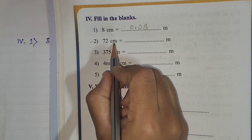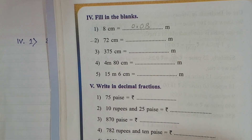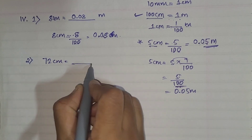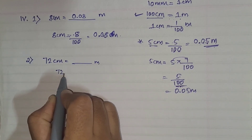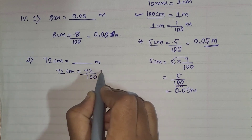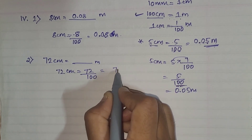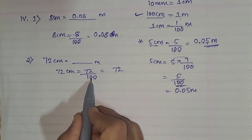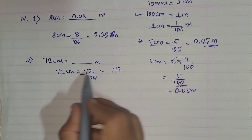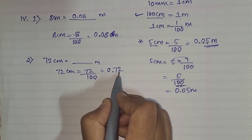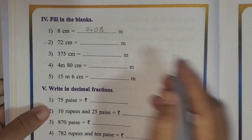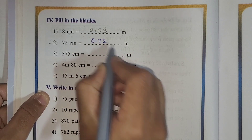Next: 72 centimeters equals dash meters. So 72 divided by 100 — write 72 as-is, there are 2 zeros, so put the decimal after 2 digits. There's no extra number, so write 0. The answer is 0.72 meter. So 0.72 meter is your answer.